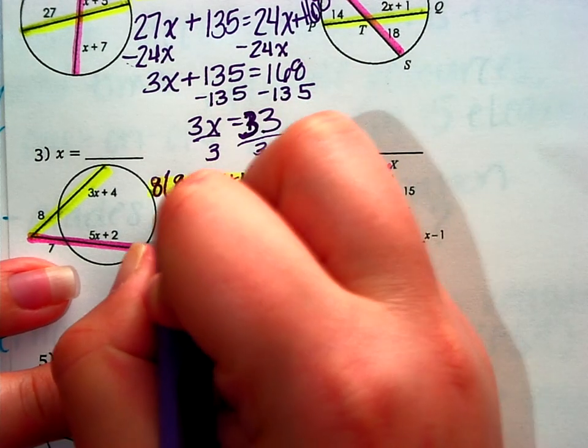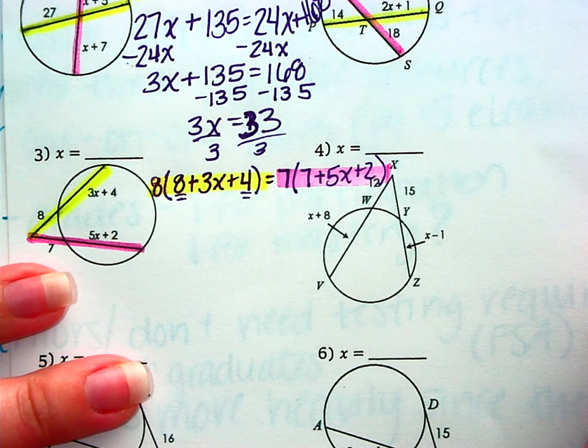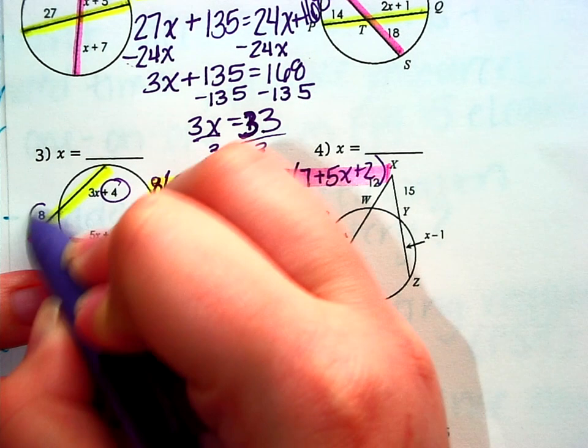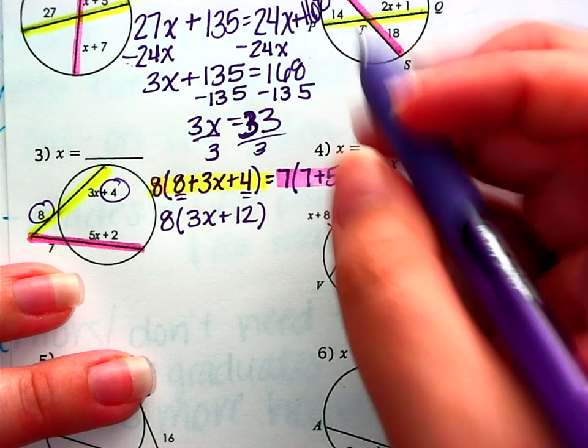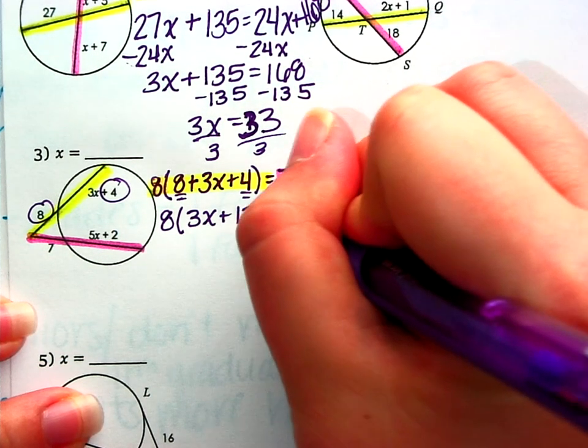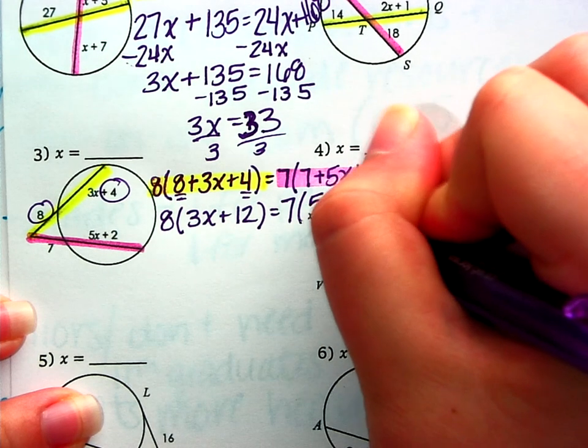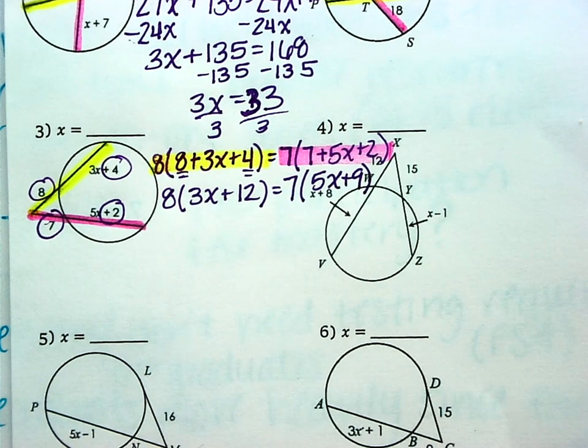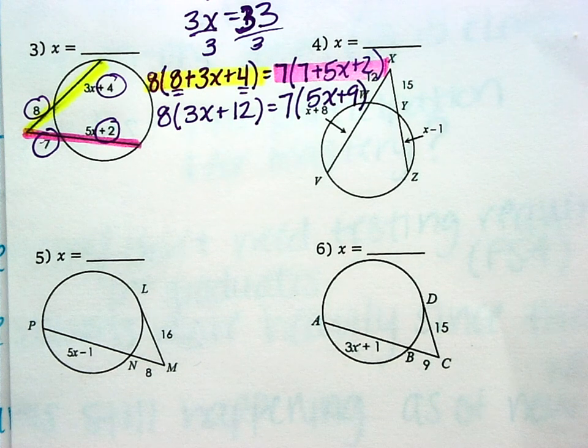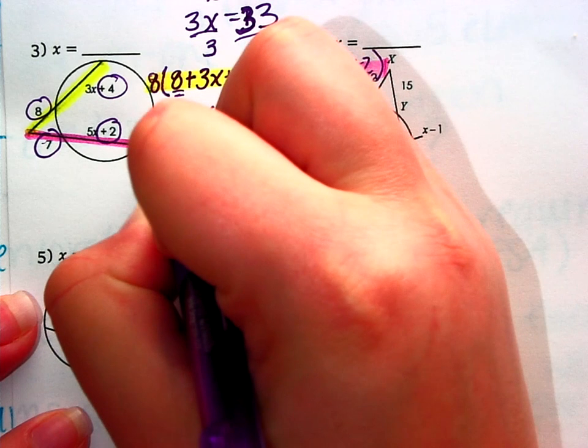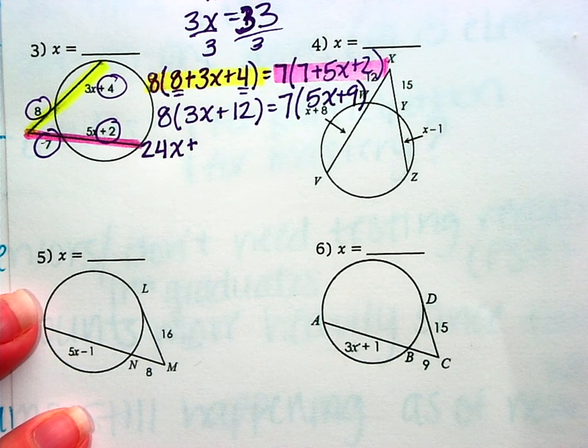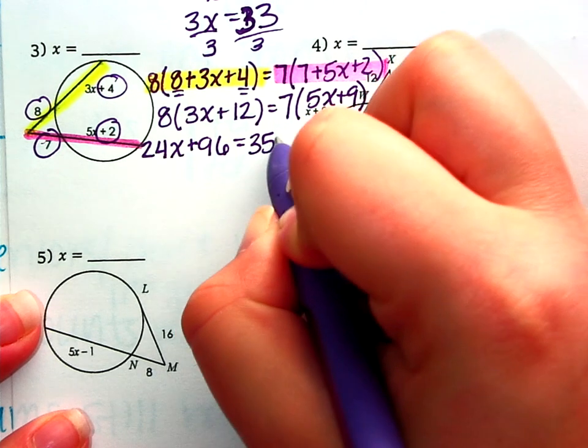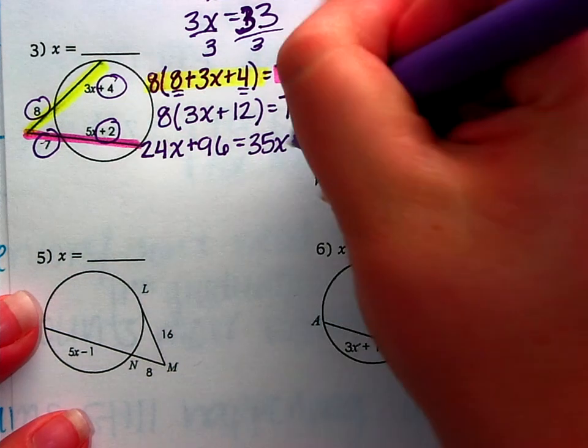Alright, before I distribute, I think we should go ahead and combine the like terms. This is really going to be 8 times 3x plus 12 because of the 8 and the 4 being added together. And this is going to be 7 times 5x plus 9 because of the 2 and the 7 being added together. So now let's distribute, we'll have 24x plus 8 times 12, 96 equals 35x plus 9 times 7, 63.